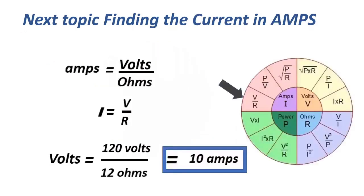For current: I equals volts over ohms, or I equals V over R. That equals 120 volts over 12 ohms, equals 10 amps.